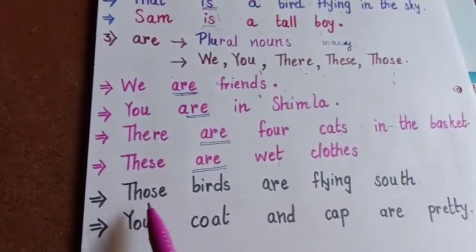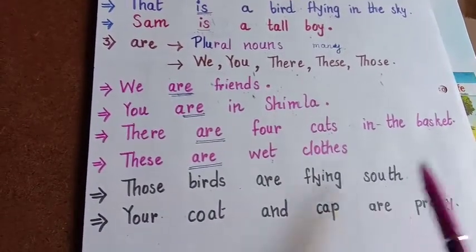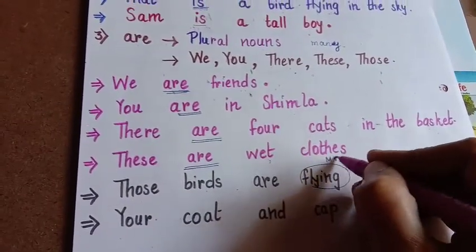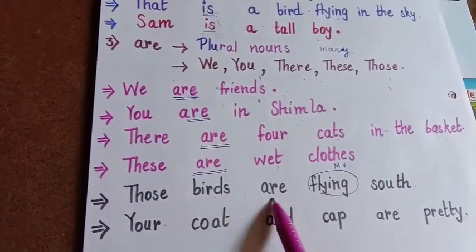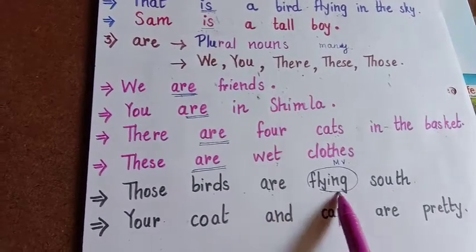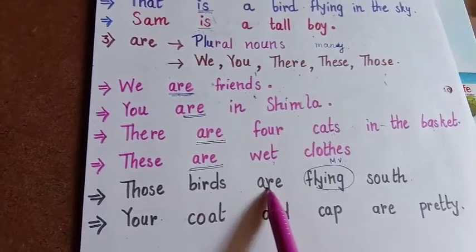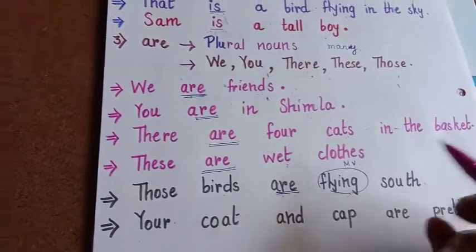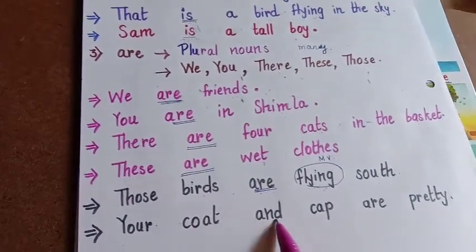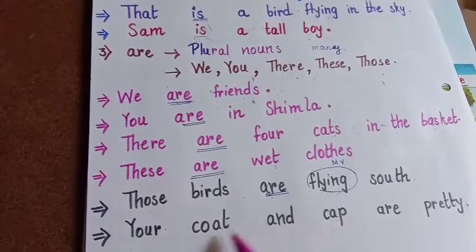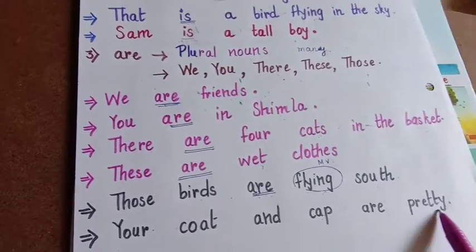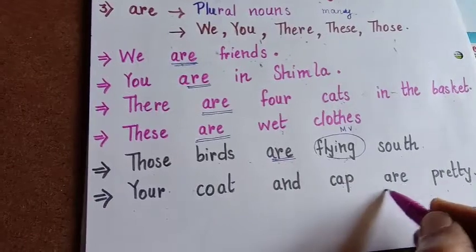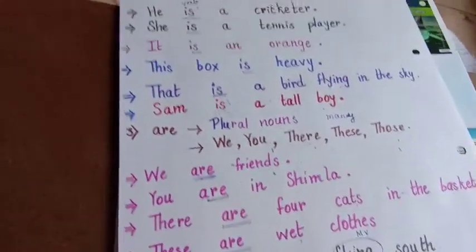'Those birds are flying south.' Here the main action is 'flying' — this is the main verb. 'Are' is the helping verb, helping the main verb 'flying', because the birds are many — plural form — so the B verb is 'are'. 'Your coat and cap are pretty' — two things, plural — the state of being pretty — so the verb is 'are'. That's all for today. Bye and have a nice day.